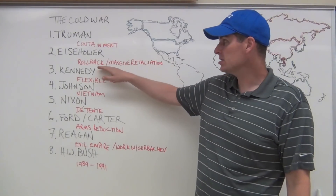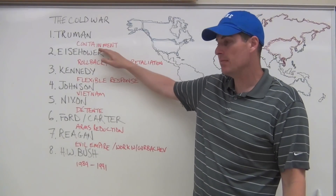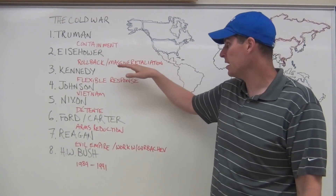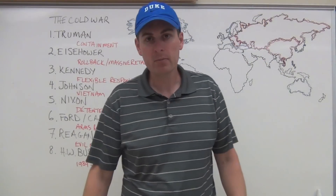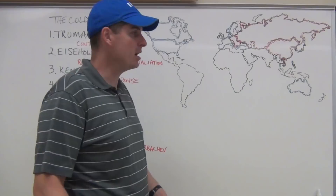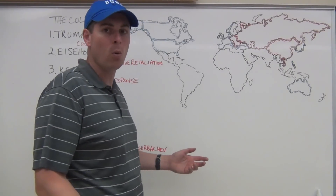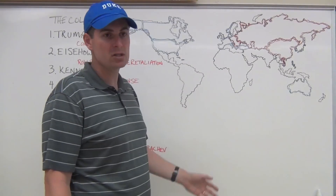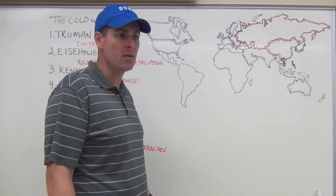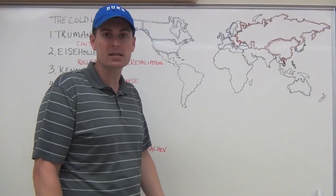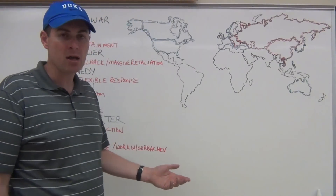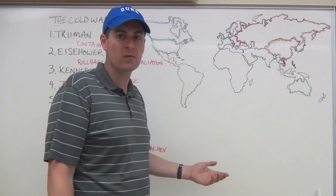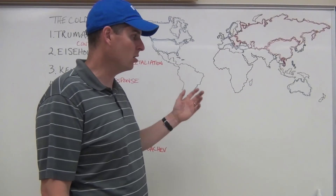Eisenhower said containment wasn't good enough — we need rollback, to push communism back. He also wanted massive retaliation rather than just alliances. However, this theory proves not to work very well. Hungary is a key example: the United States encourages Hungarians to revolt, they do, and then the Soviets send in tanks. Was the U.S. going to start a hot war that could escalate into nuclear war? No. The Hungarians get crushed, the U.S. fails to fulfill its promise, and it doesn't look good.